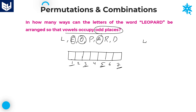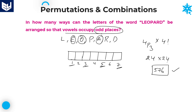Arranging three vowels in four odd positions can be done in 4P3 ways. We are left with four consonants: L, P, R, D, which can be arranged in the four remaining places in four factorial ways. Therefore, the required answer is 4P3 into 4 factorial. 4P3 is 24 and 4 factorial is also 24. So 24 into 24 equals 576. That is the required answer — 576 ways.